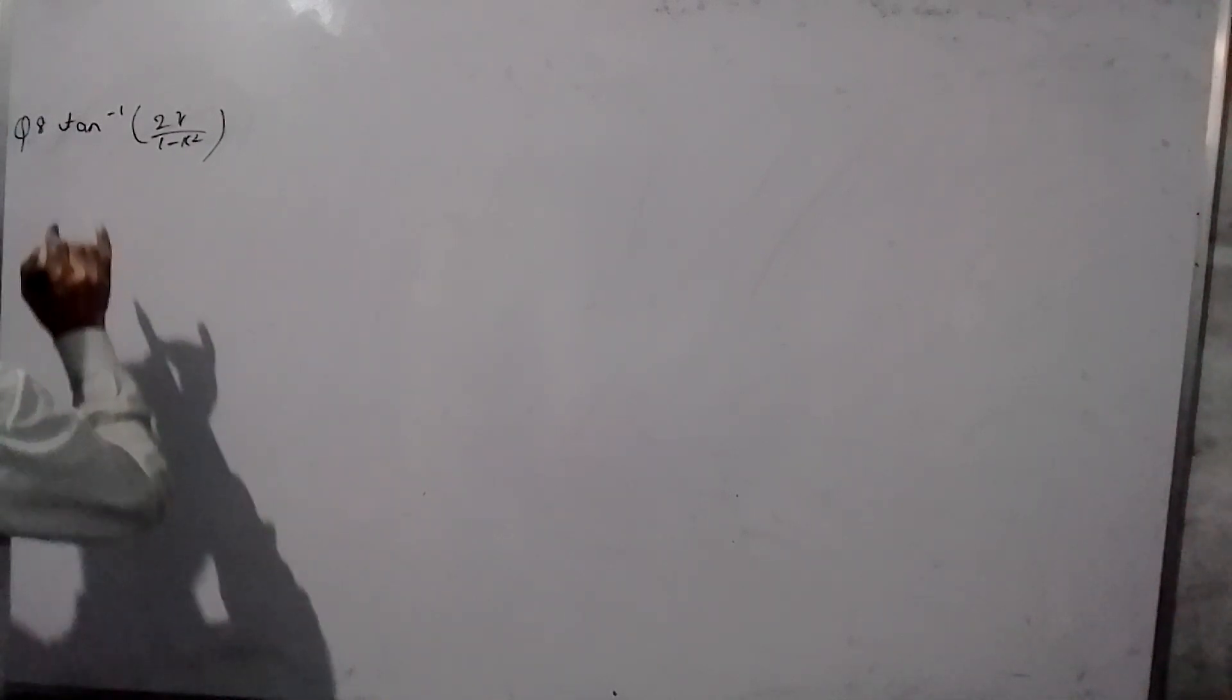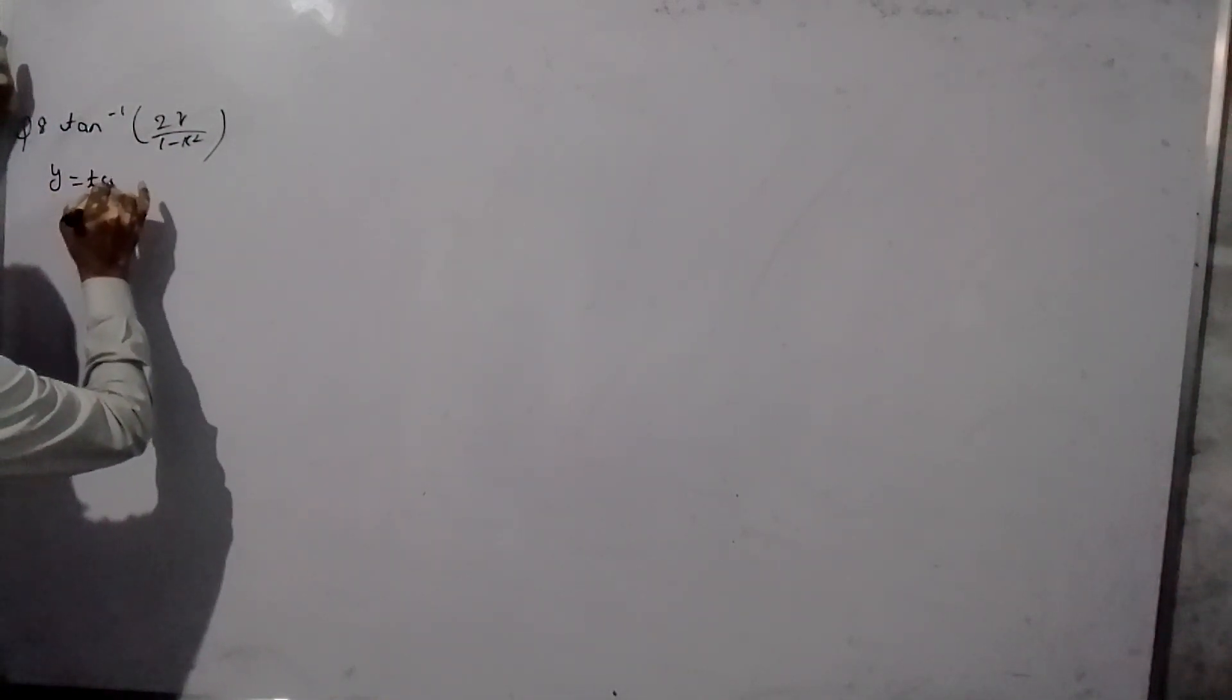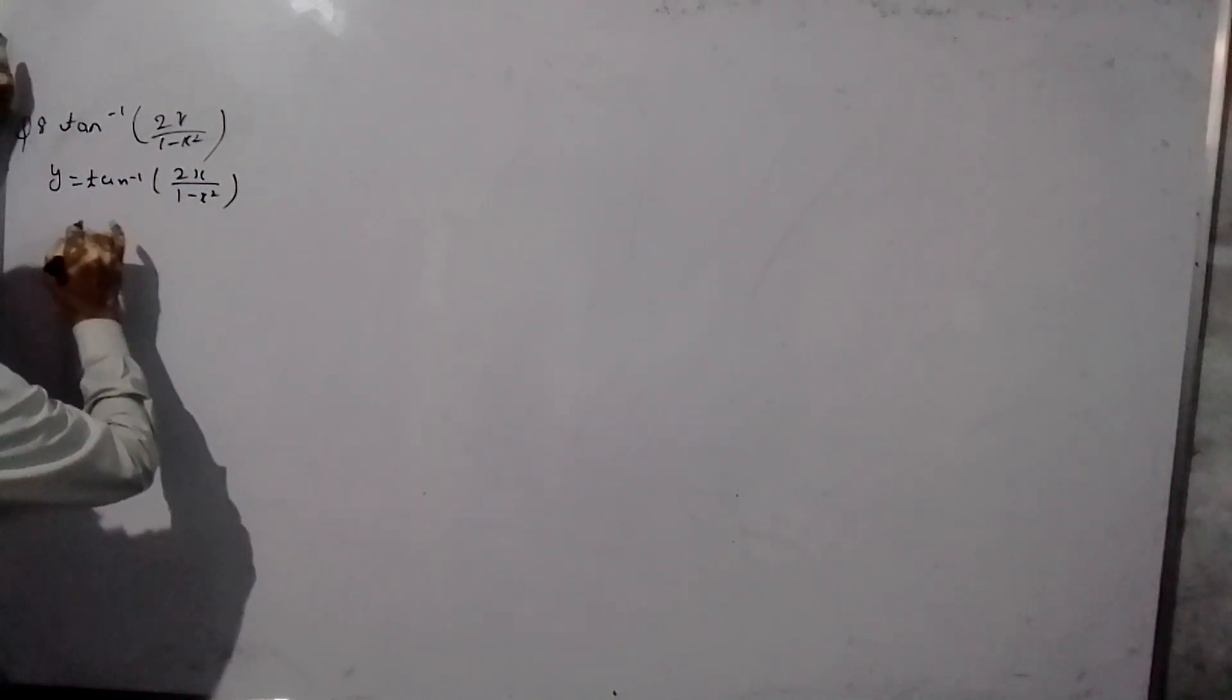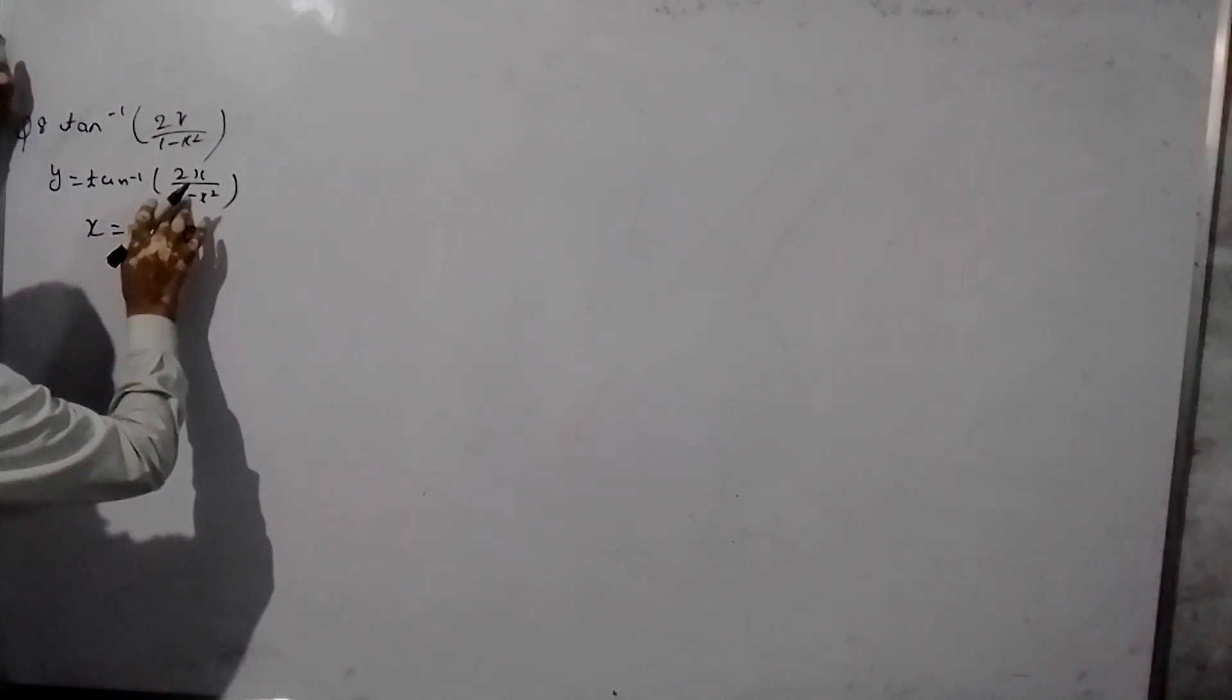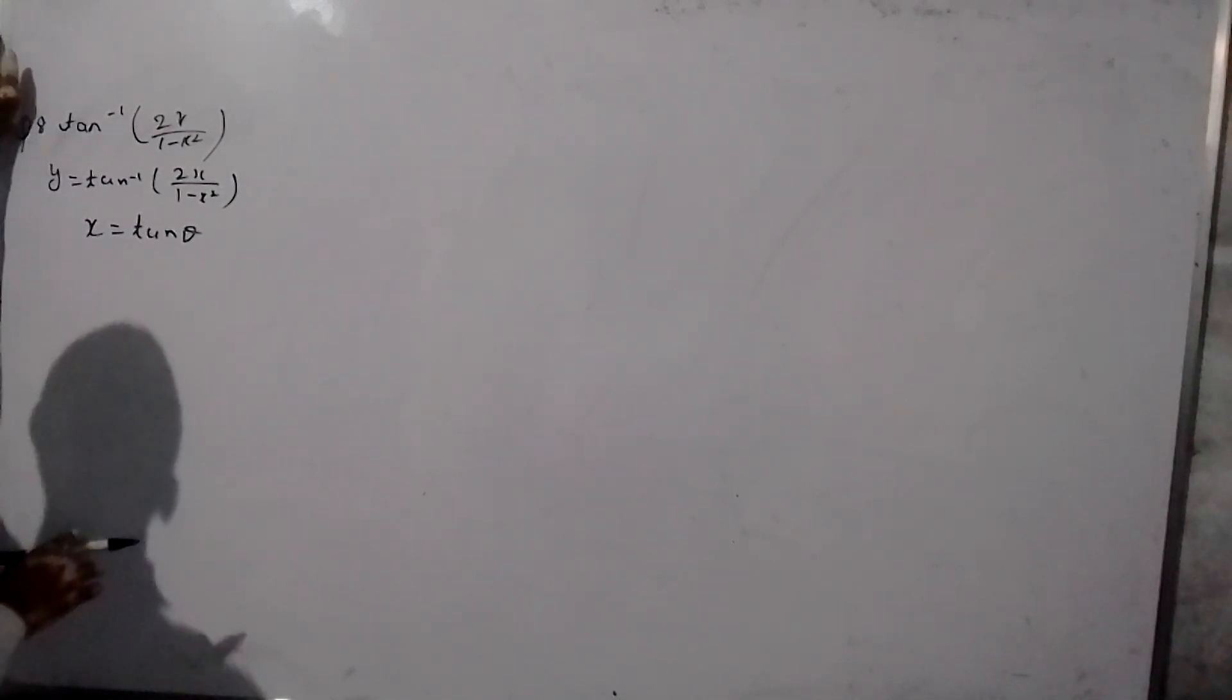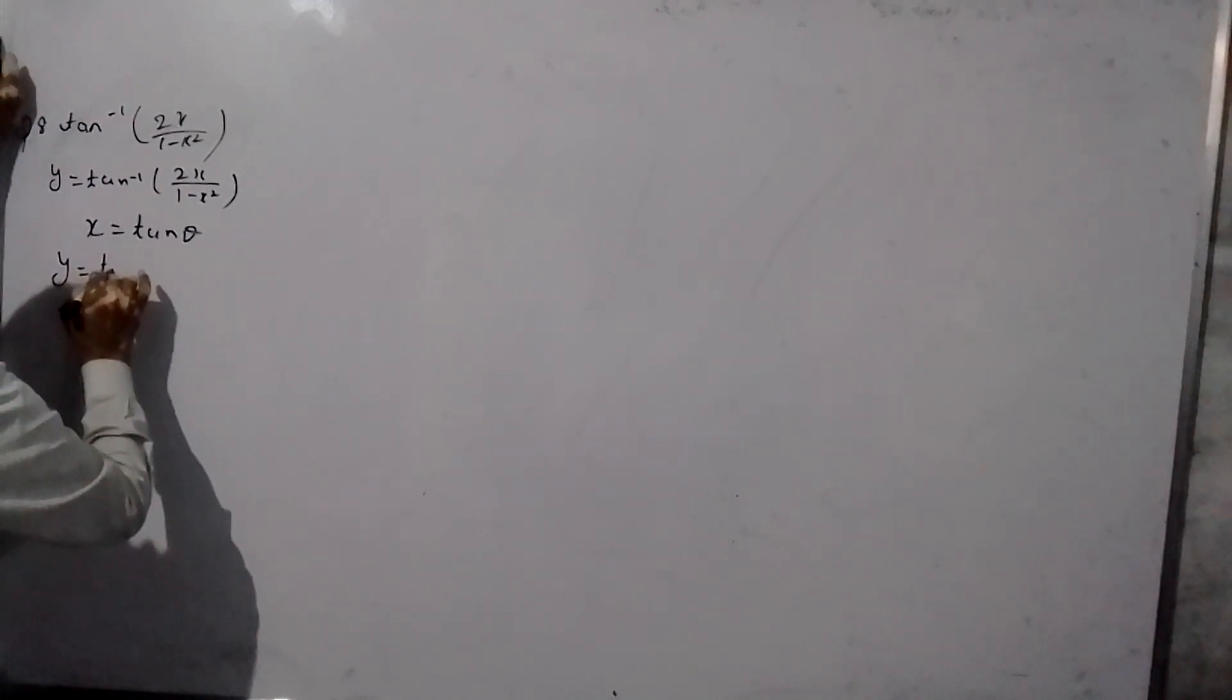This is simple. This is y equals 2 tan inverse 2x upon 1 minus x squared. In case x equals tan theta, tan theta is equal... tan inverse tan equals 2 theta. So students, now you have tan inverse.